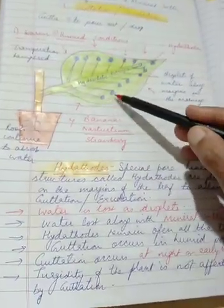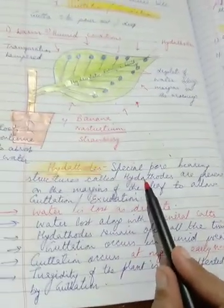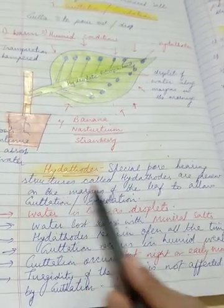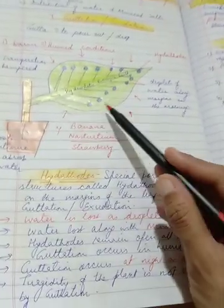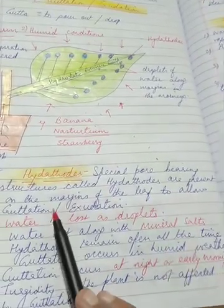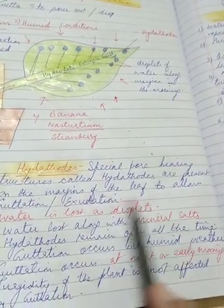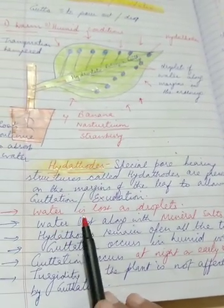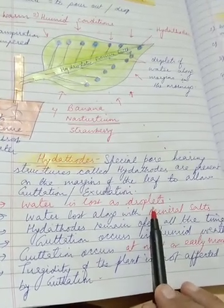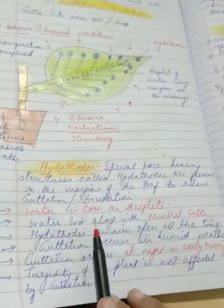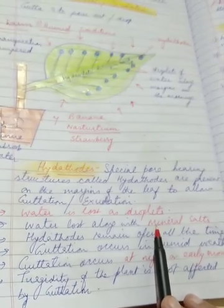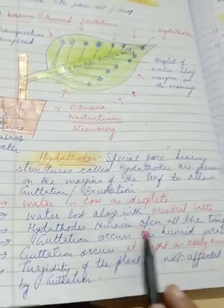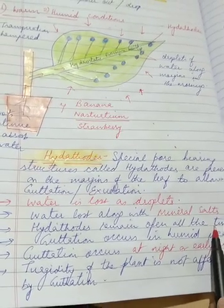So let us see what are hydathodes. Hydathodes are special pore-bearing structures at the tips of the veins in certain plants, or they are present at the margins of leaf to allow guttation or exudation. In guttation, water is lost as droplets. Water is lost along with mineral salts. This is also very important. Hydathodes remain open all the time, unlike stomata which open and close.